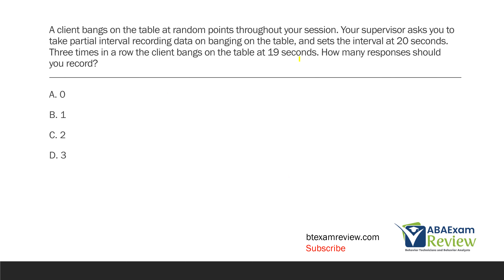We have a measurement question — specifically, how many responses you're going to record. When you're measuring behavior, your primary objective is to take accurate, reliable data, meaning you want to capture what is happening. In this case, what type of measurement are we using? We are using partial interval recording — a discontinuous measurement system where we set an interval. Our interval is at 20 seconds, and if the behavior happens at any point during that 20 seconds, we record a response.